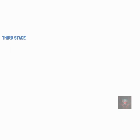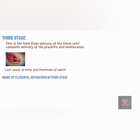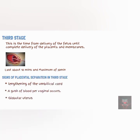The third stage of labor occurs from the delivery of the fetus to the delivery of the placenta. It lasts between 10 minutes to 30 minutes. The placenta is usually delivered as a result of uterine contraction and uterine retraction, which leads to the separation of the placenta from the uterine wall. The signs of placenta separation include lengthening of the umbilical cord, a gush of blood per vaginum, the uterus becoming more globular, and the fundus of the uterus being palpable in the abdomen above the umbilicus.